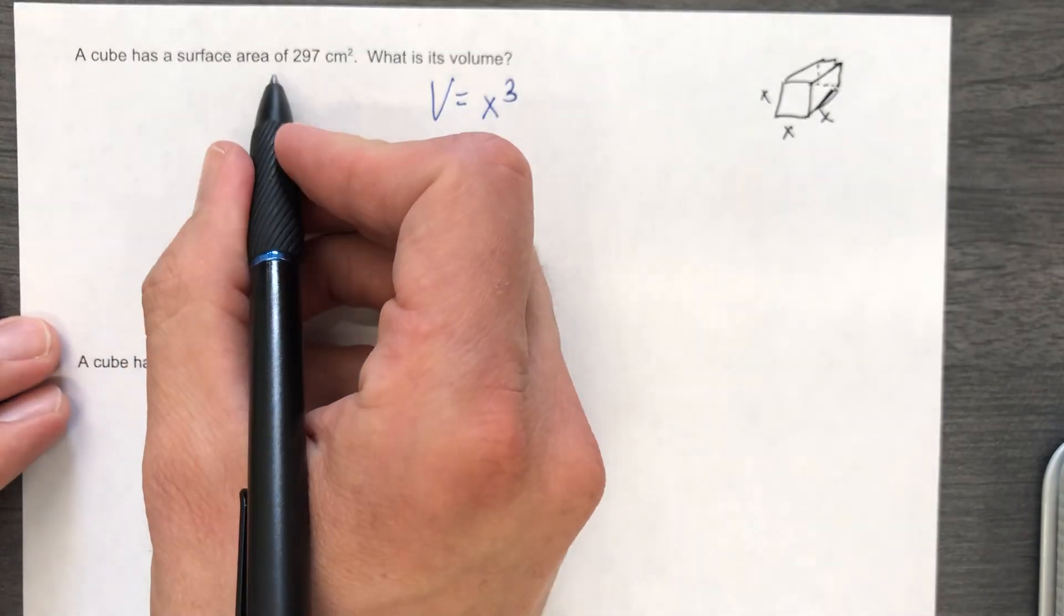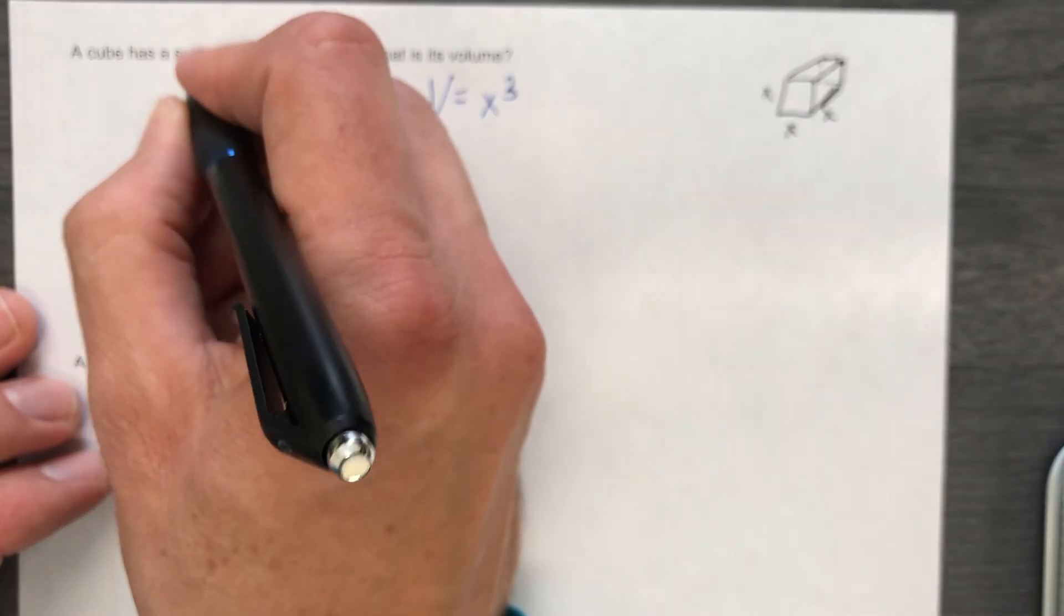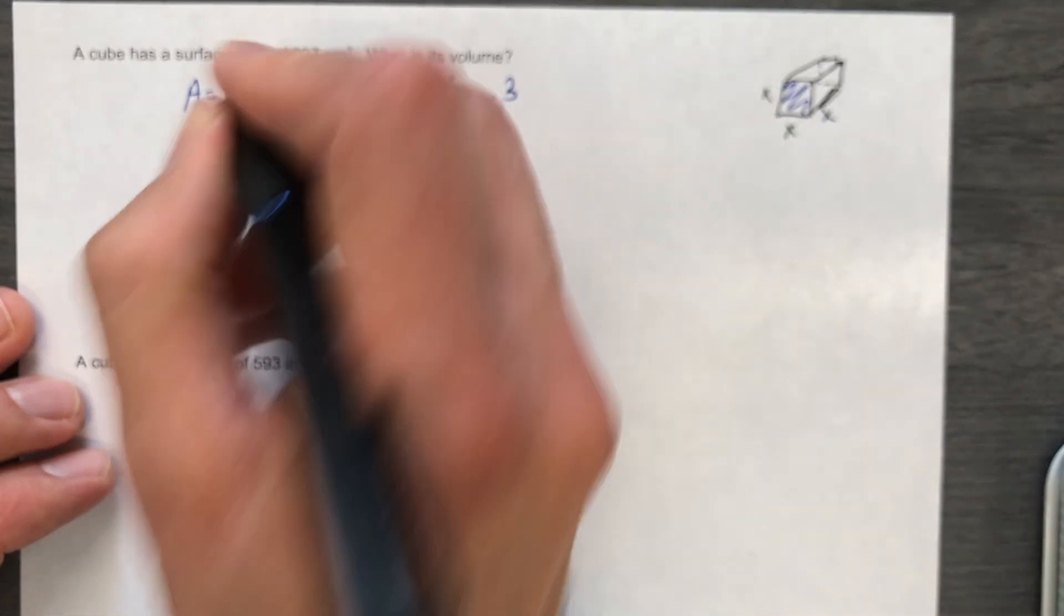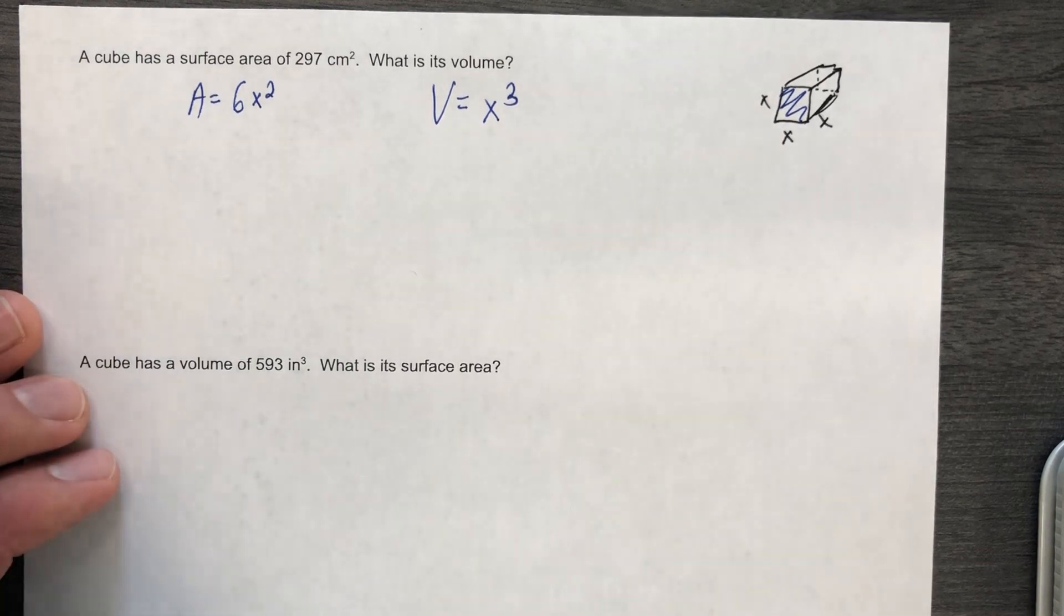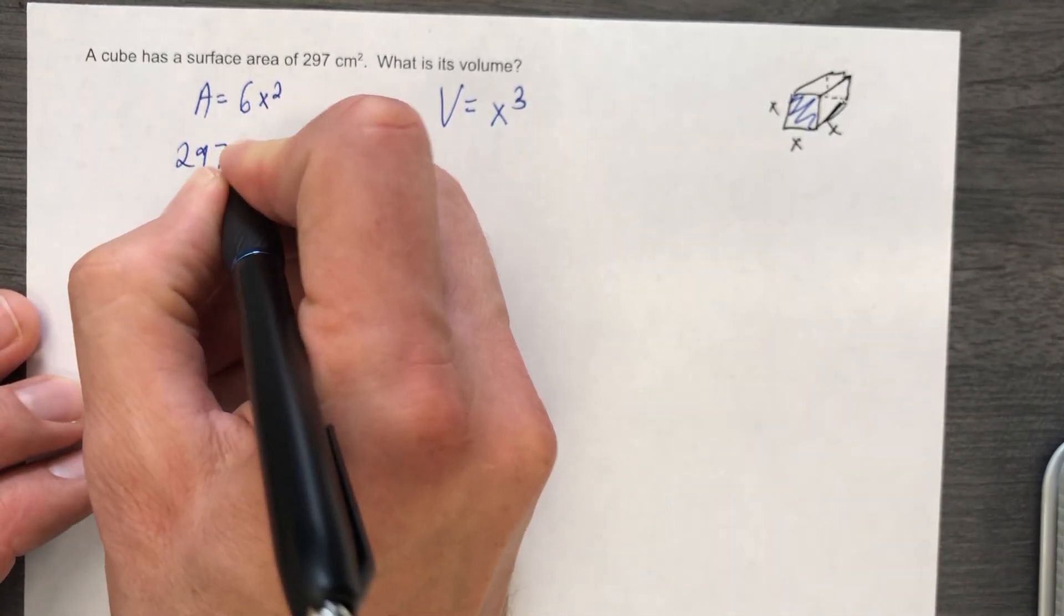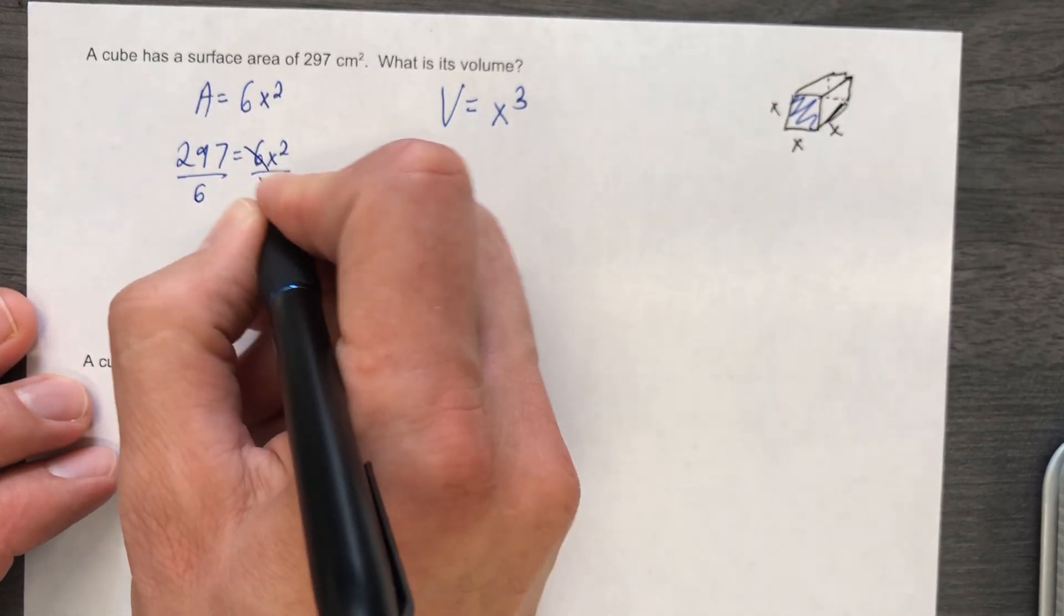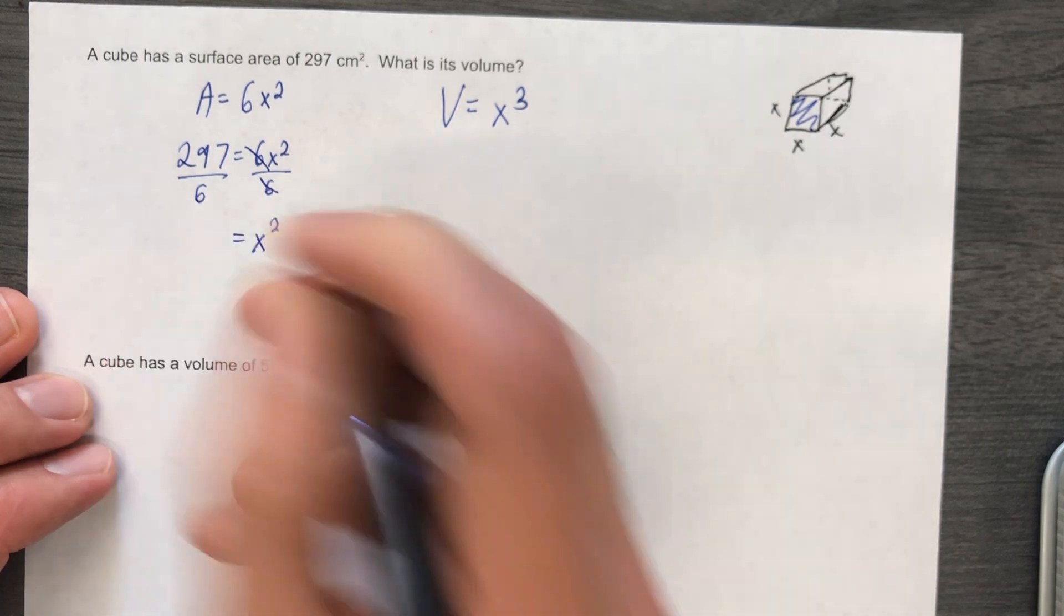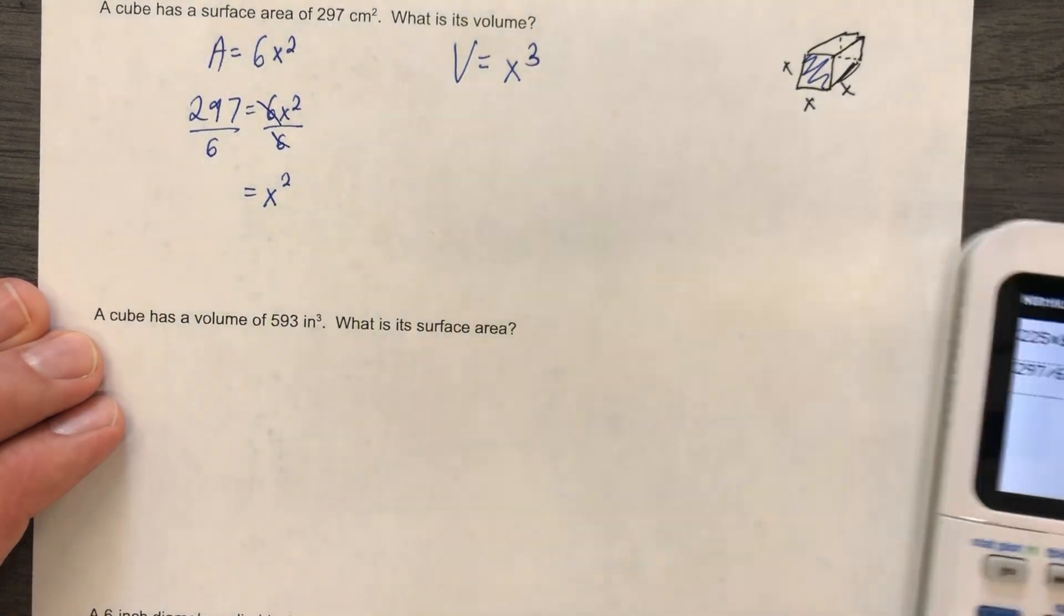But then they gave you the surface area. We don't know x. We don't have the length of the side. But we do know the surface area. And that would be like if I wanted one side, it would be x squared. But I really have six sides because it's a cube. Again, not drawn like a cube, but whatever. It's the best I got. Don't make fun of it. So 297 equals 6x squared. We're going to divide both sides by 6. And that is not going to be pretty. 297 divided by 6 is 49.5.